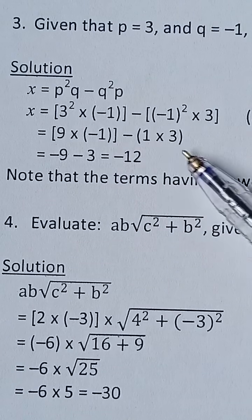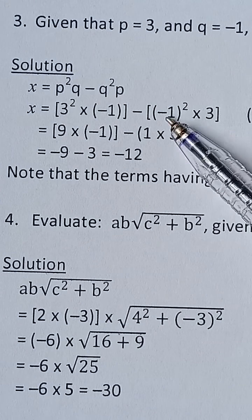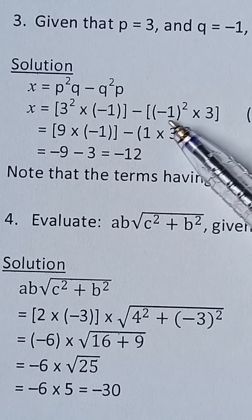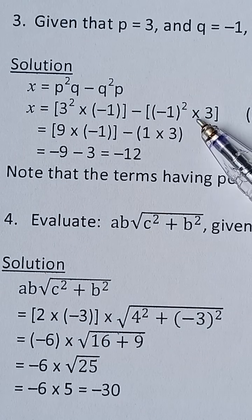Then minus, you can see it here, minus the negative 1. That is q squared is negative 1 squared, then p is 3, so we multiply by 3.